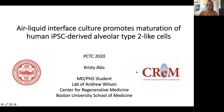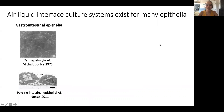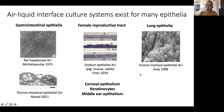Air-liquid interface culture systems exist for many epithelia, including epithelia of the gastrointestinal system — which is interesting because some of those don't actually exist at air-liquid interface in vivo — the female reproductive tract, several others including the skin and the eye. In the lung, models of the airway epithelium at air-liquid interface have served as a very useful in vitro model for years to study the effect of environmental exposures, including viral infections, on airway epithelial cells.